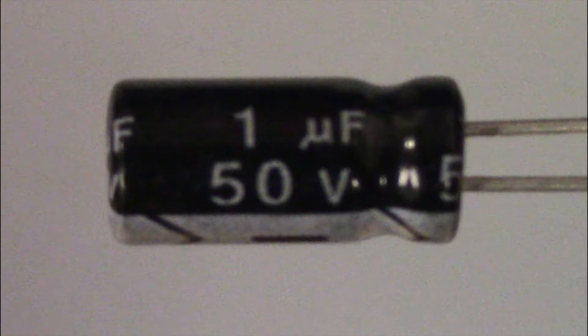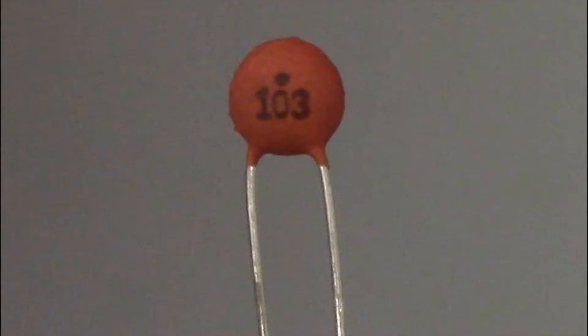The electrolytic capacitor's value is labeled on the case. The non-polarized ceramic capacitor has 103 printed on it. The first two numbers indicate the first two digits. The third number indicates the multiplier. So this cap has a value of 10,000 pico, 10 nano, or 0.01 microfarad. Cap values are always in picofarad unless otherwise indicated.